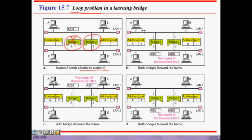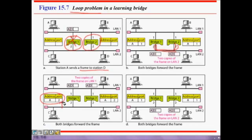When A sends a frame to D, both bridge 1 and bridge 2 receive it. Both record in their tables that A is coming from port 1. Two copies of the frame arrive at LAN 2 — one from bridge 1 and one from bridge 2. The copy from bridge 1 travels to LAN 2, and since bridge 2 is also on LAN 2, it picks up that packet as well — now seeing A as coming from port 2.